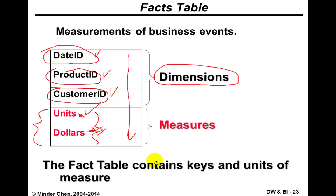So the facts table is pretty simple. It's basically all the foreign keys pointing to each one of the dimensions linked to the facts table together — that forms the primary key — plus all the measures you may have to measure the performance related to the sales process.